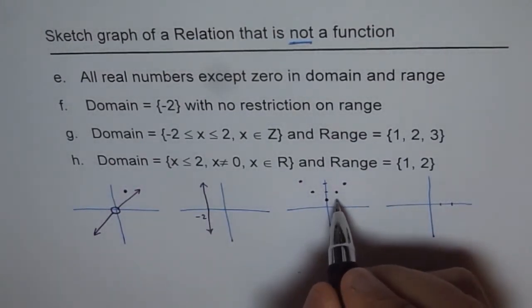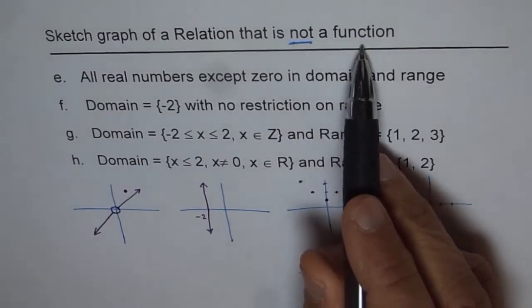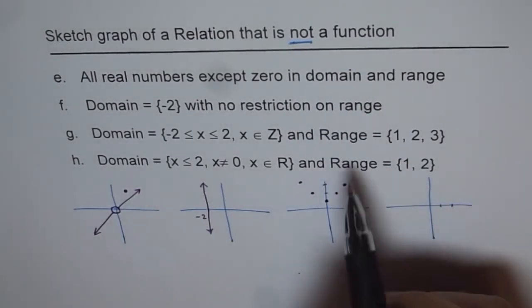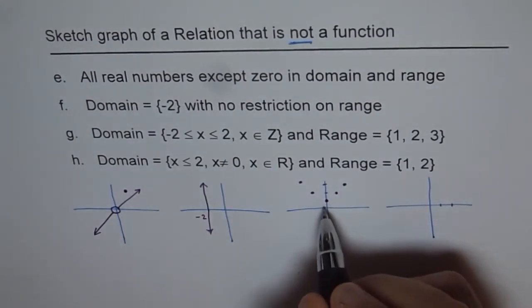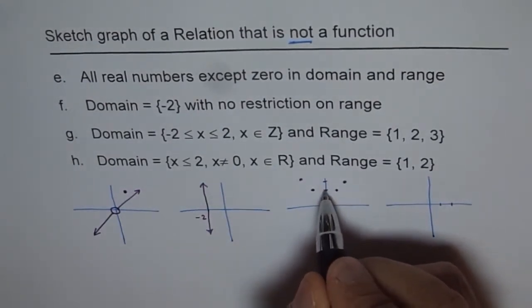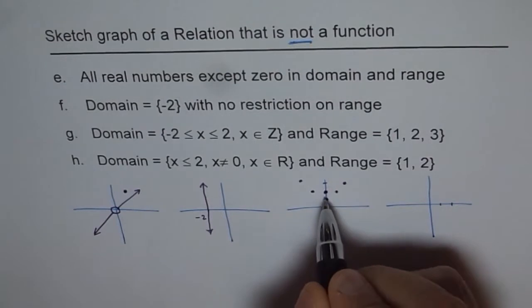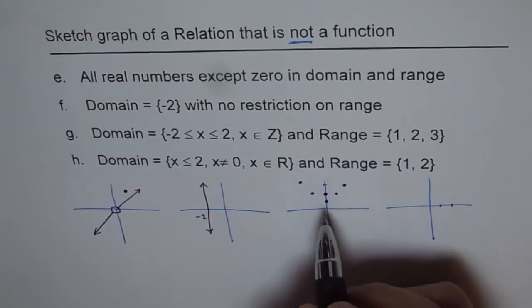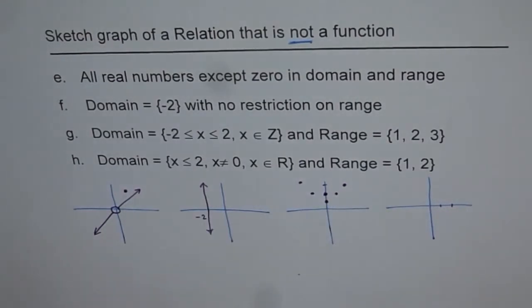Well the previous one, I did do a mistake here. That is we have to do not a function. Remember not a function. Therefore I need to introduce a point here so that it fails that test. It could be here or there, whichever. But that additional point is important to ensure that it's a relation and not a function. So make a note of that.